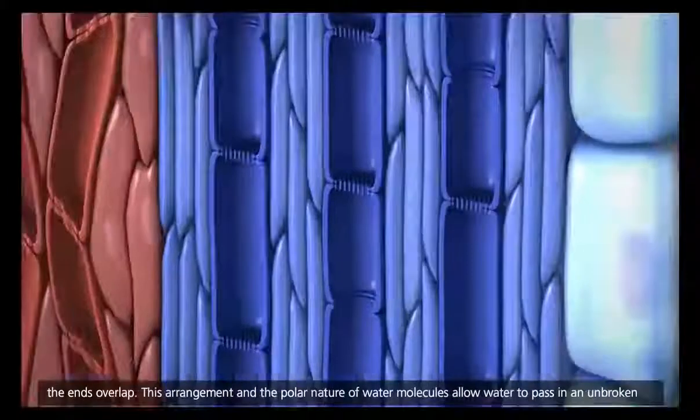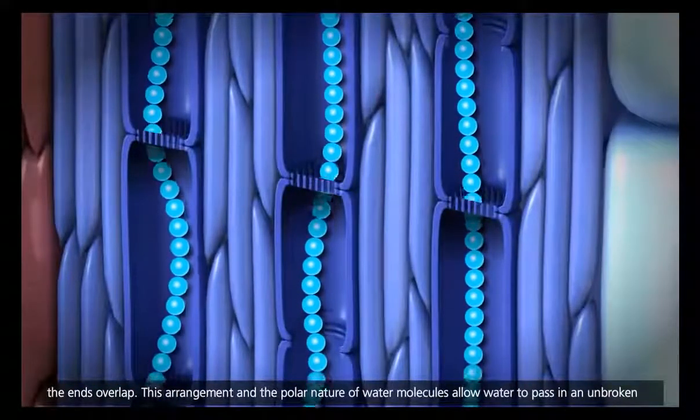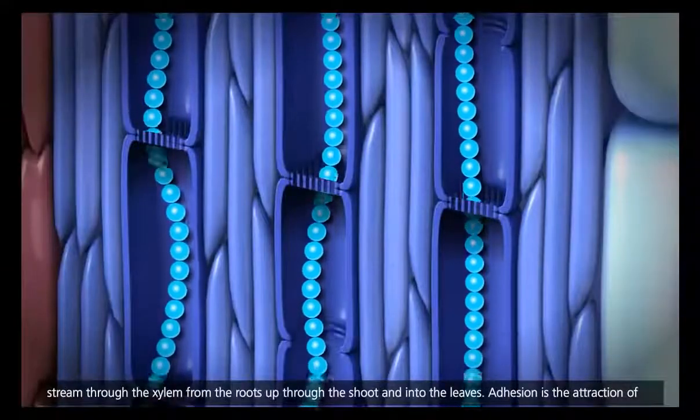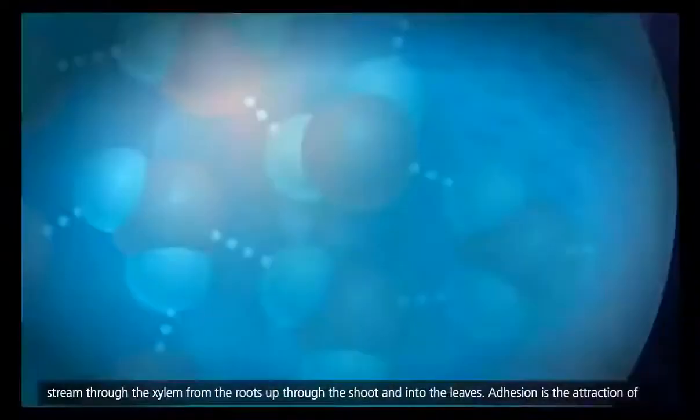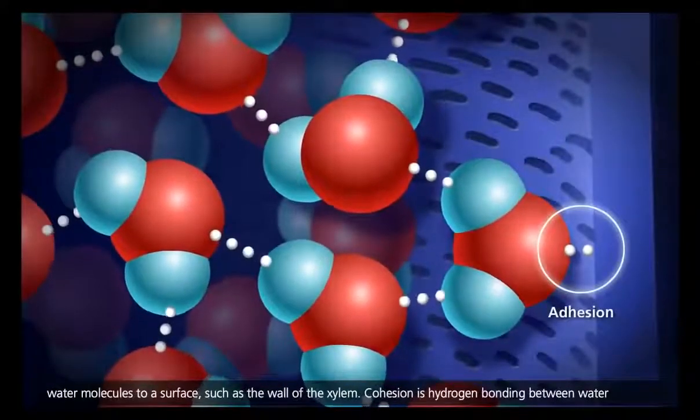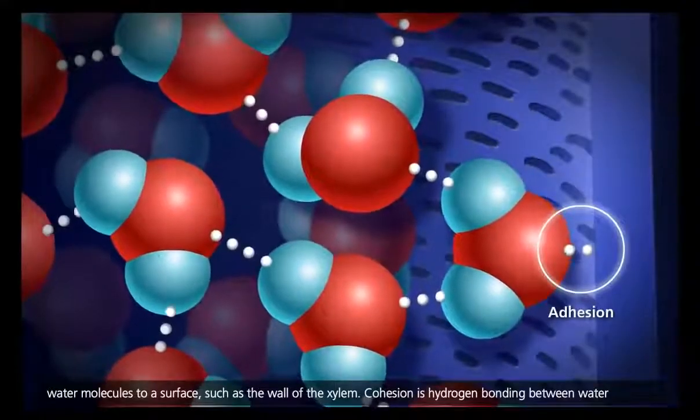This arrangement, and the polar nature of water molecules, allow water to pass in an unbroken stream through the xylem, from the roots, up through the shoot, and into the leaves. Adhesion is the attraction of water molecules to a surface, such as the wall of the xylem.